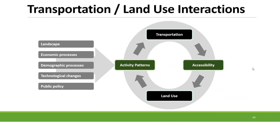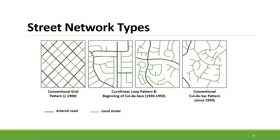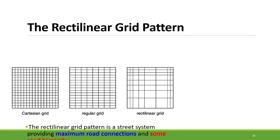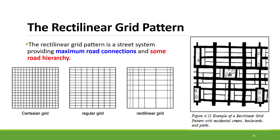Another component of urban form is the street networks. What kind of street network type you opt for development will ultimately shape the city. The most common go-to pattern is the rectilinear grid pattern, which provides maximum road connection and road hierarchy. It is a very straightforward pattern adopted by most planners to shape the city.